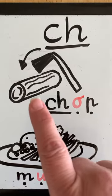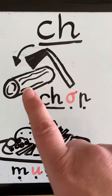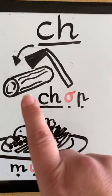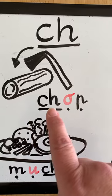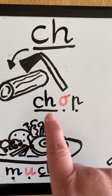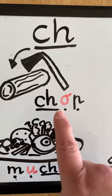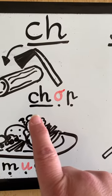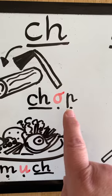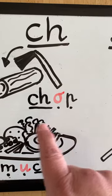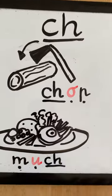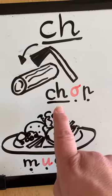Here's a picture of something being chopped — a piece of wood or a log being chopped. And here's the word CHOP, and as you can see there's the digraph CH. If we were to sound it out it would sound like this: CH, O, P — CHOP. And that's at the beginning of the word.